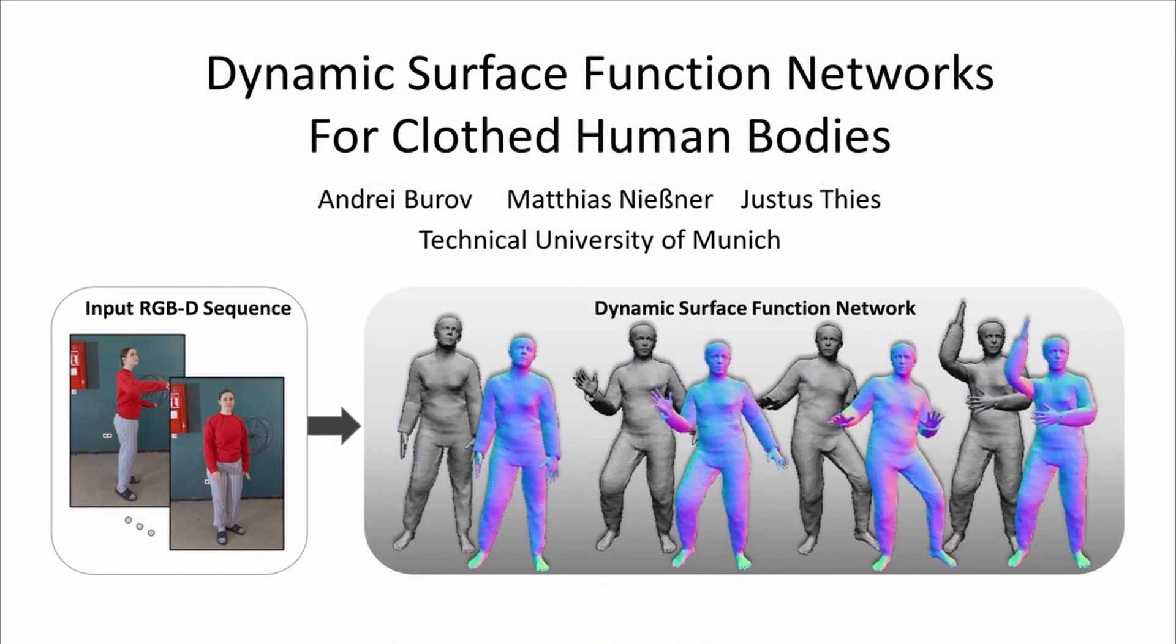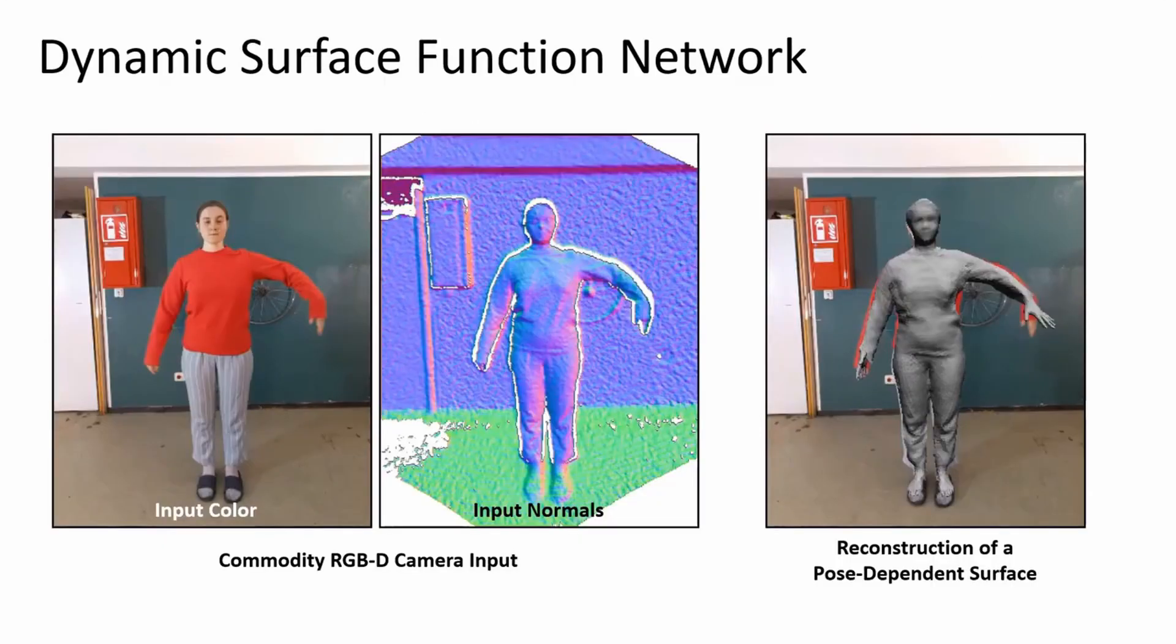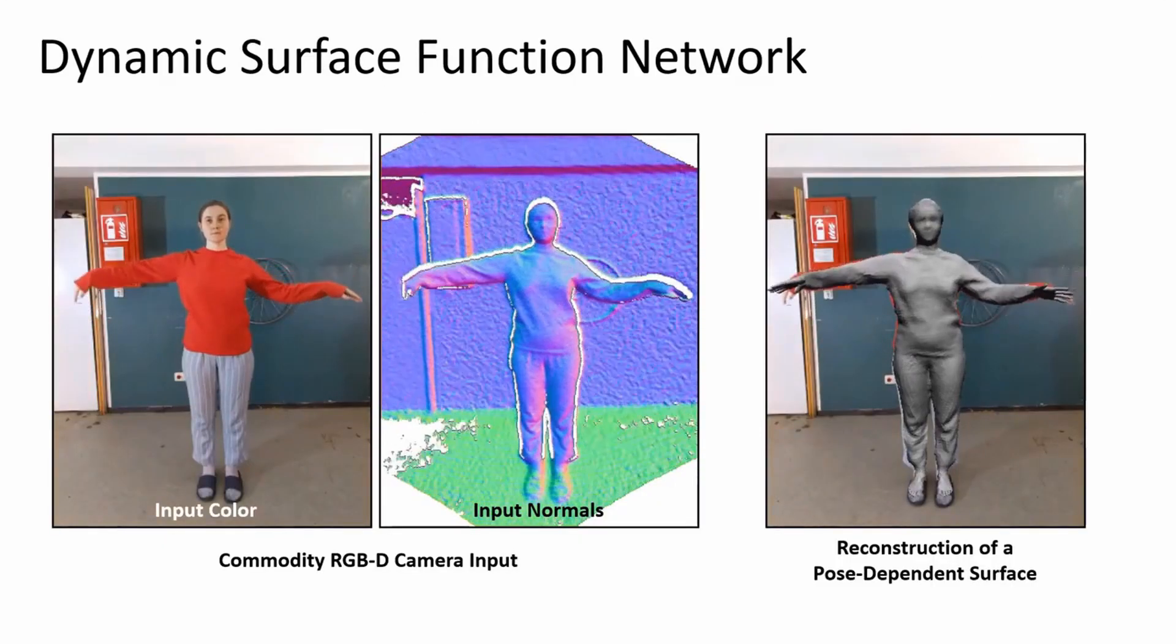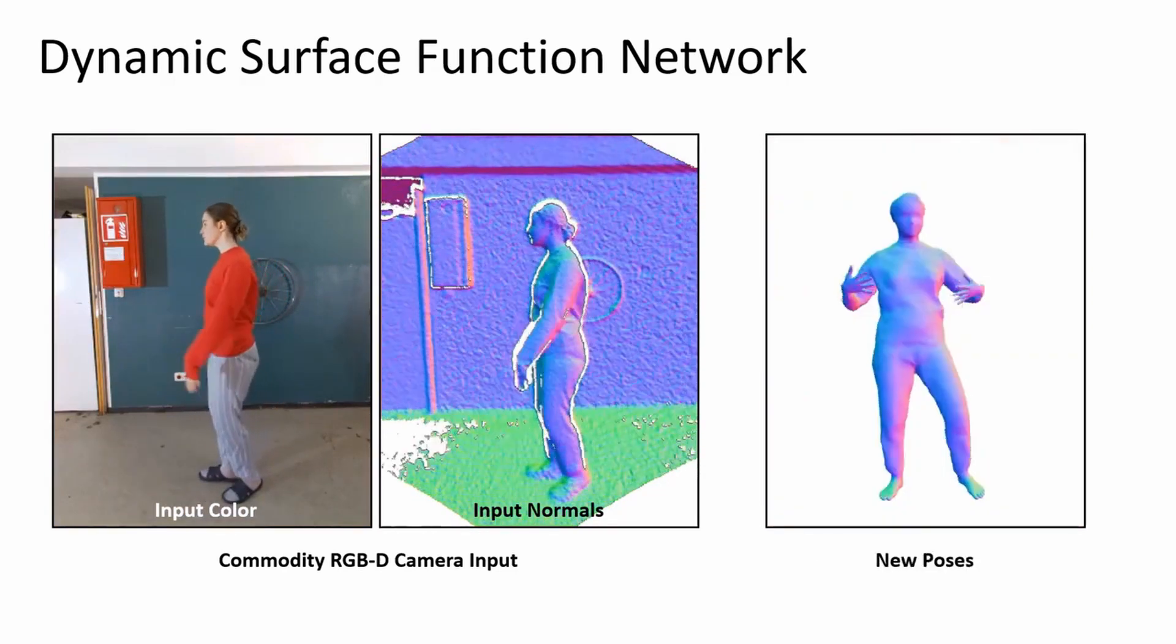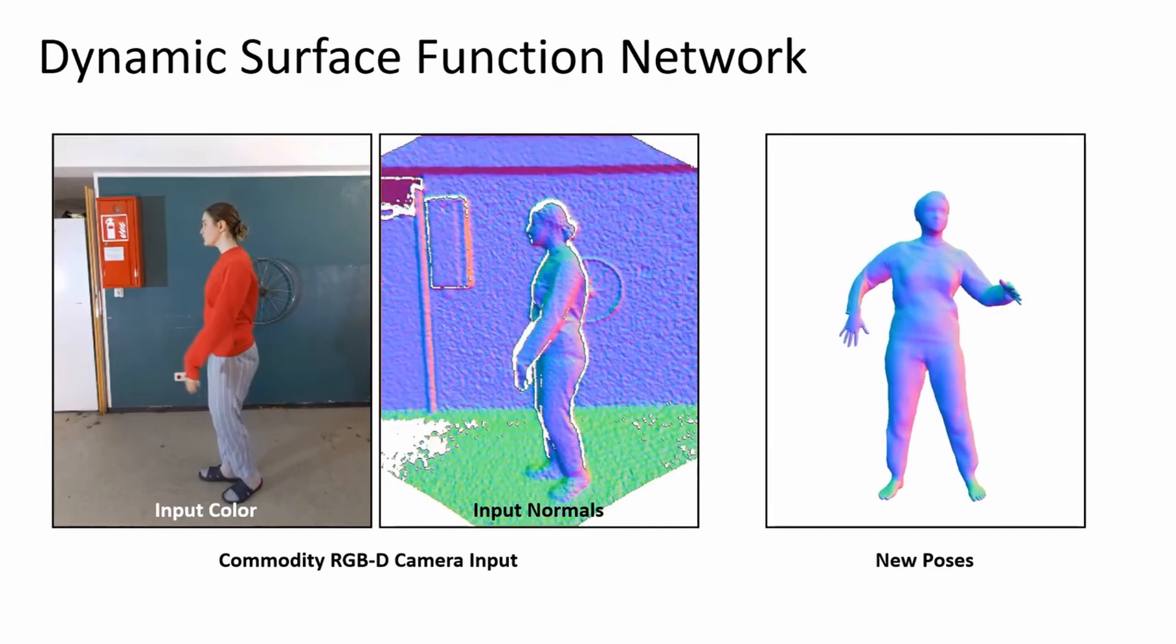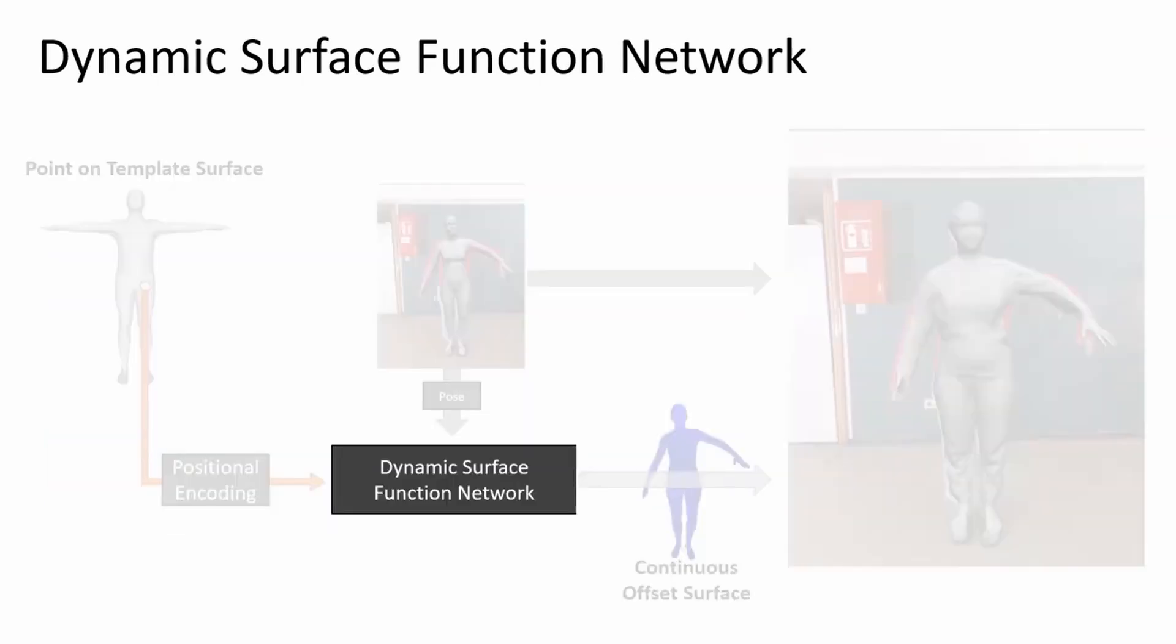We present dynamic surface function networks for clothed human bodies. Our task is to reconstruct the surface of a moving human, including the pose-dependent deformations of the clothing. We propose a novel explicit representation that allows us to reconstruct the surface as well as animate it afterwards. At the core of our method is a deep neural network that represents the dynamically changing surface. It is embedded on the surface of a template mesh.